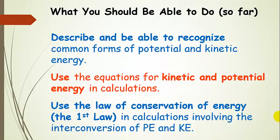You should be able to describe and recognize common forms of potential and kinetic energy — especially if given a few features about them. You should also be able to use the equations for kinetic and potential energy in calculations like we just did, and discuss the types of energy present. Finally, you should be able to use the law of conservation of energy — also called the first law — in calculations involving the interconversion of potential energy and kinetic energy.